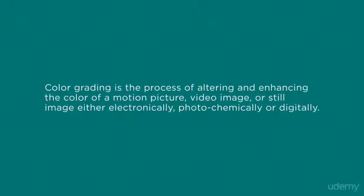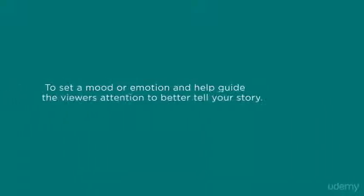Let's start with a definition of color grading. Color grading is the process of altering and enhancing the color of a motion picture, video image, or still image, either electronically, photochemically, or digitally. But really, it's to set a mood or emotion and help guide the viewer's attention to better tell your story. It's helping to answer the question of what is this image trying to communicate.